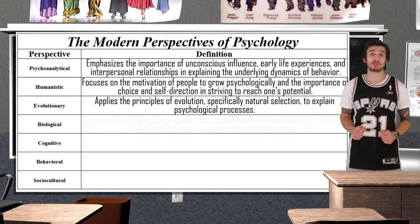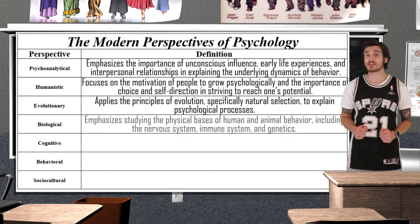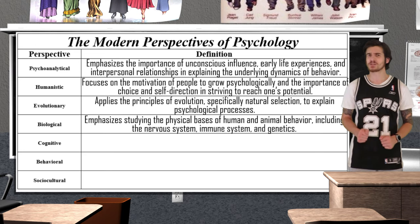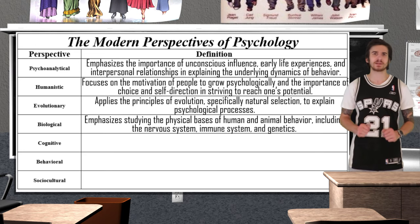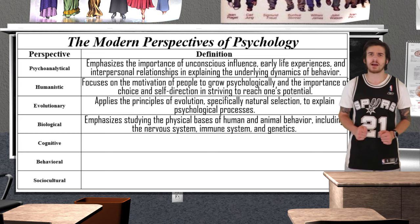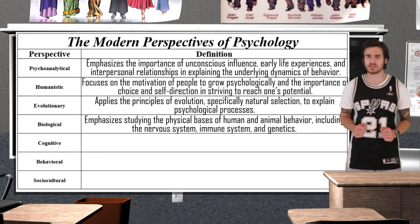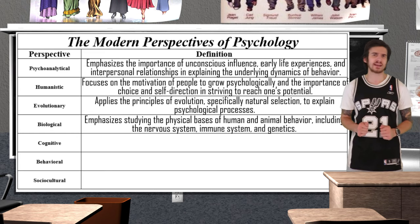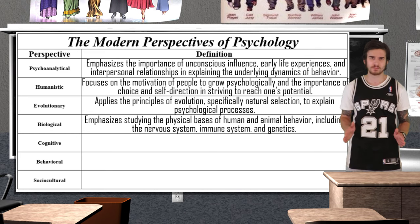The biological perspective is a way of looking at psychological issues by studying the physical basis of human behavior. Biological psychologists focus on the nervous system, mainly the brain, when studying behavior. A biological psychologist might state that an individual is experiencing hallucinations as a result of an excess of the neurotransmitter dopamine.